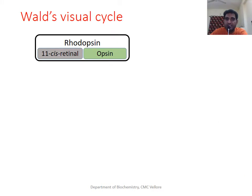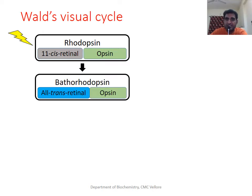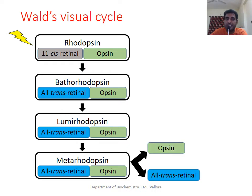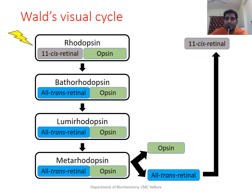The events that take place after rhodopsin gets activated by light are called the visual cycle. When light falls on the retina, the energy from photons converts 11-cis retinal to all-trans retinal. This activates rhodopsin and leads to conversion through several intermediates. In the end, opsin and all-trans retinal are released. This sequence of events is important to activate signals inside the rod cells, which are transmitted to neurons and the brain.